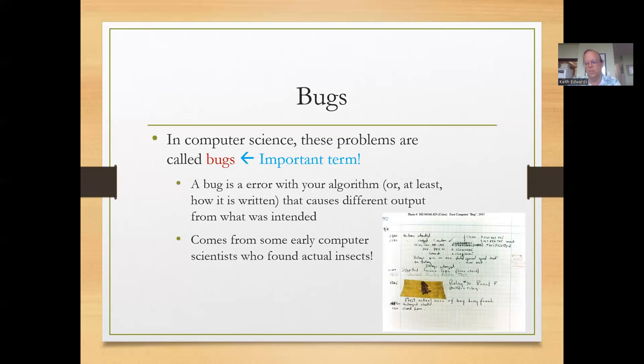And it's an error in your algorithm, or at least how it's written, that causes something different to happen than what you intended. And the term actually comes from early computer scientists who found insects. These notes that appear here on the slide are from Grace Hopper, who was the one who coined the term bug. And you can see in her notes that it says first actual case of a bug being found.